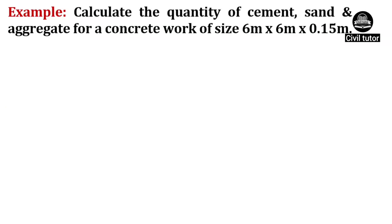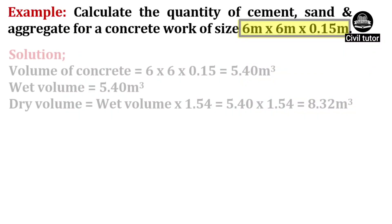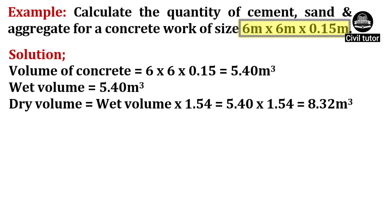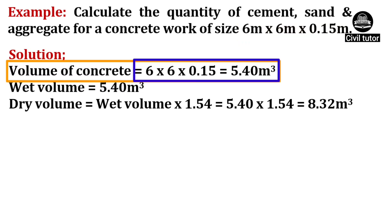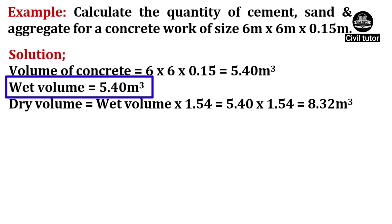Suppose we need to calculate the quantity of cement, sand and aggregate for a concrete work — say a slab of size 6m × 6m whose thickness is 150mm, that is 0.15m. First of all, we will calculate the volume of concrete, which is given by length × width × thickness of slab, that is 6 × 6 × 0.15, giving a total of 5.40m³, which is actually the wet volume of this concrete.